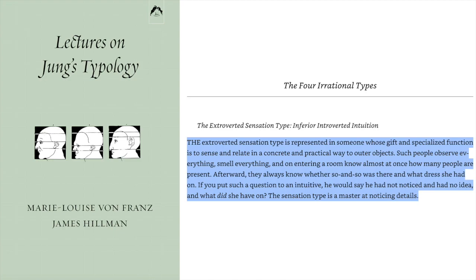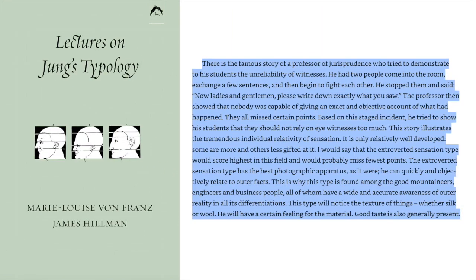Afterward, they always know whether so-and-so was there and what dress she had on. If you put such a question to an intuitive, he would say he had not noticed and had no idea what she had on. The sensation type is a master at noticing details. There is a famous story of a professor of jurisprudence who tried to demonstrate to his students the unreliability of witnesses. He had two people come into the room, exchange a few sentences, and then begin to fight each other. He stopped them and said, 'Now, ladies and gentlemen, please write down exactly what you saw.' The professor then showed that nobody was capable of giving an exact and objective account of what had happened — they all missed certain points. Based on this staged incident, he tried to show his students that they should not rely on eyewitnesses too much.